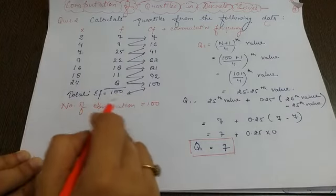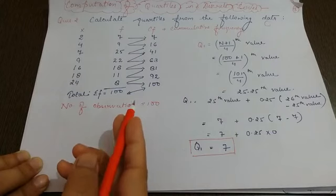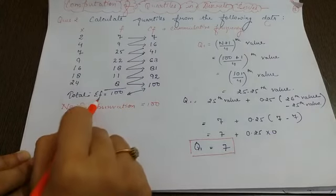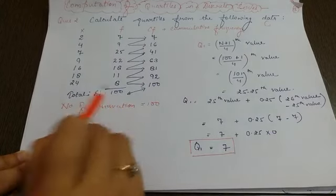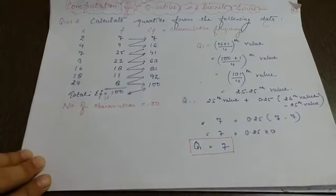Now after obtaining this, here we have calculated the calculation for getting the first, second, and third quartile. Here the summation f is the same as your n. You can call this n. Okay, now in this case, using the formula,